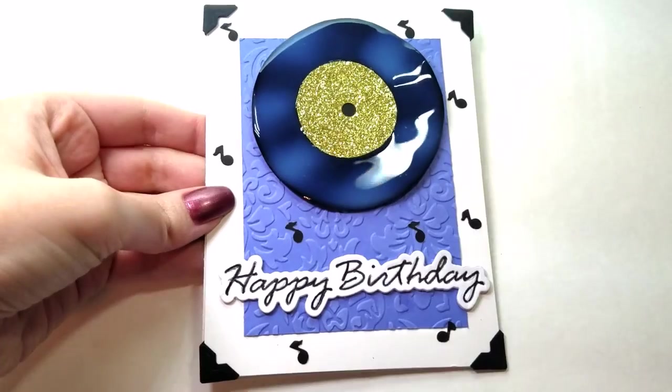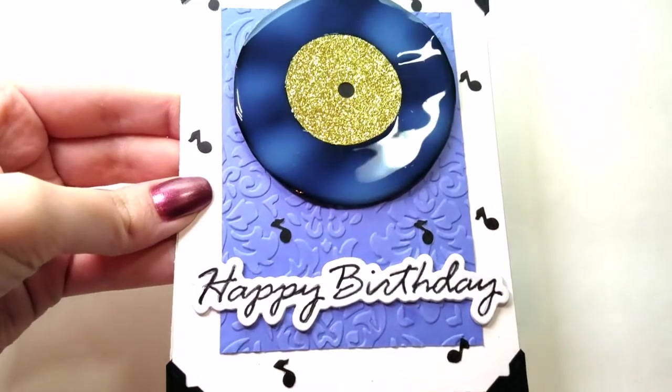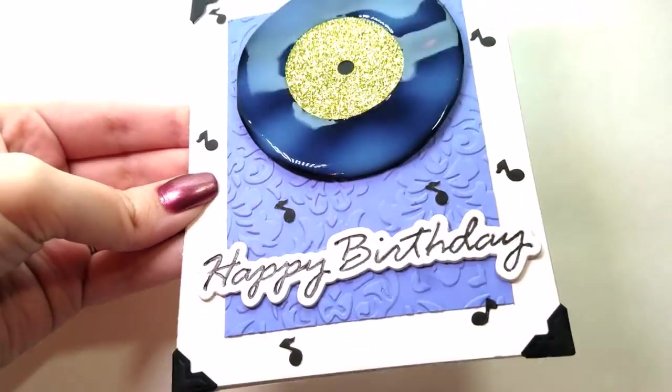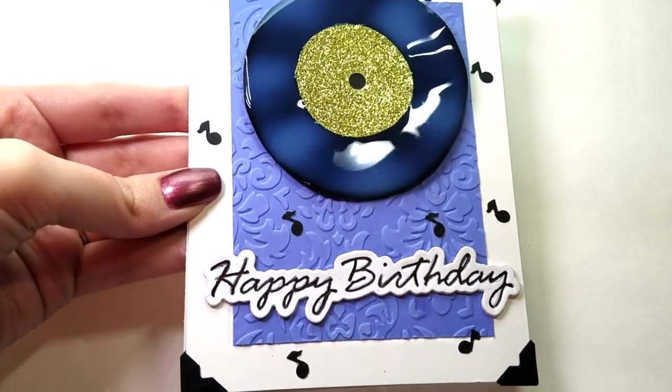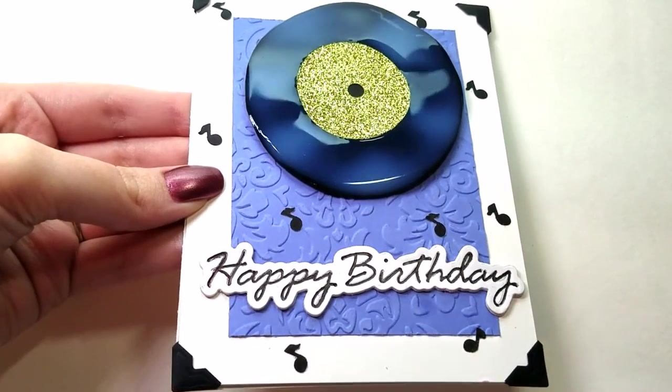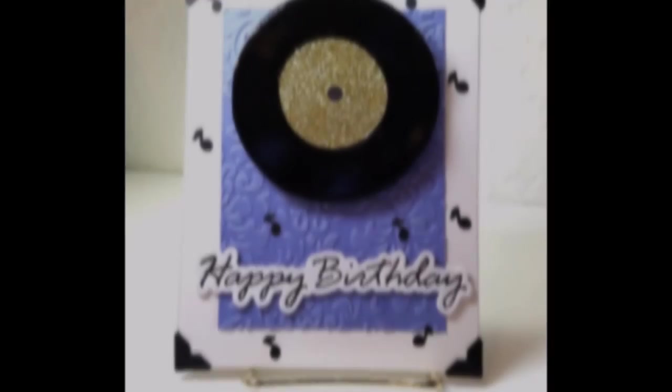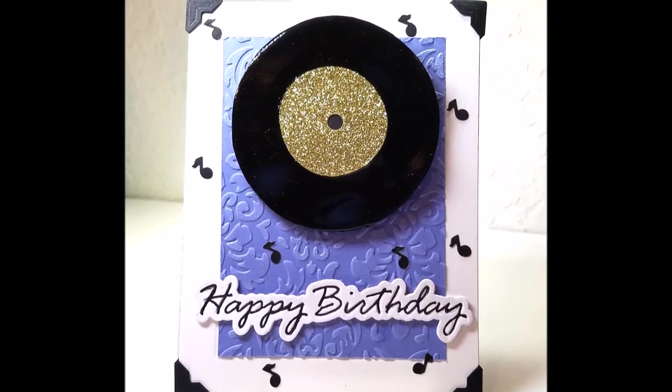And this is what the glossy accents will look like when it's still wet, and you'll notice it kind of has a little bit of an almost blue tint to it at this point. But once it's dry, it will dry clear, and it makes your record look black and shiny, just like this. So, here's the finished card. I think it turned out really nice, and I had a lot of fun making this.